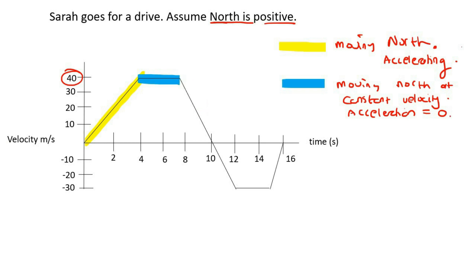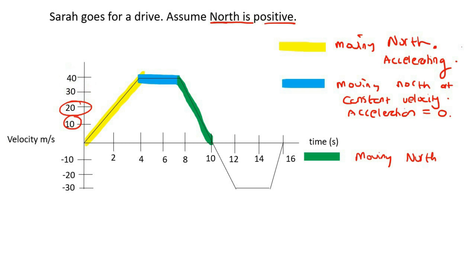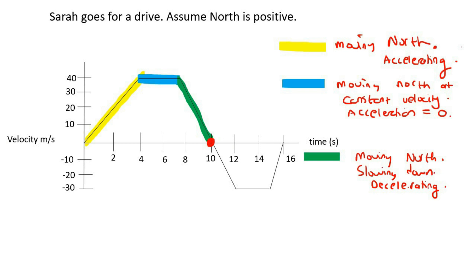For this section, some learners will say Sarah has turned around — once again, that's not correct. That would only be true if this were a displacement graph. Her velocity values are 30, 20, 10 — all positive — so she's definitely moving north. But her velocity is going from 40 to 30 to 20 to 10, so she's slowing down, or decelerating. And when we get to the point where her velocity reads zero, Sarah has stopped.